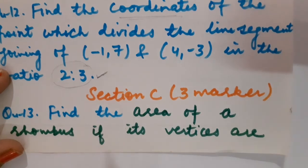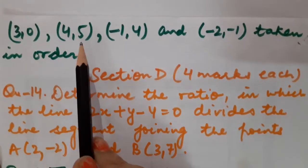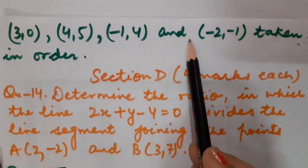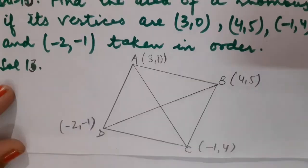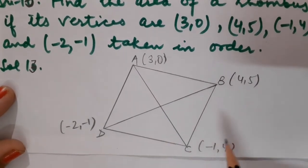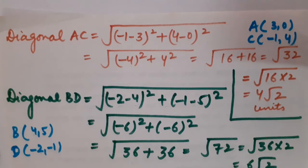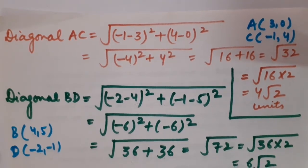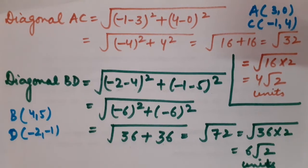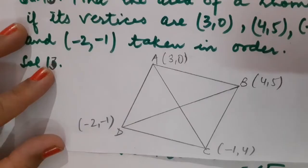Our next question is a 3-marker. Find the area of the rhombus if its vertices are A(3,0), B(4,5), C(−1,4) and D(−2,−1) taken in order. The formula to calculate area of a rhombus is half × d₁ × d₂, where d₁ and d₂ are the lengths of the diagonals — the distances between opposite vertices. First I will calculate diagonal AC, then diagonal BD.